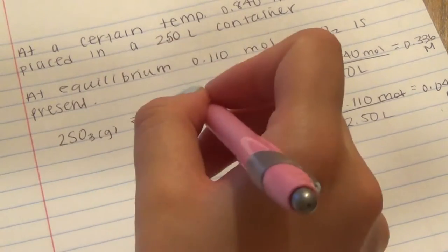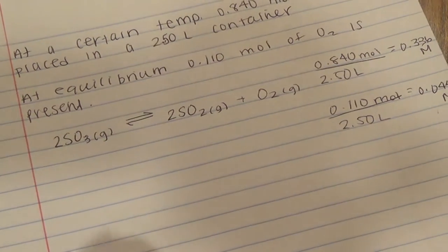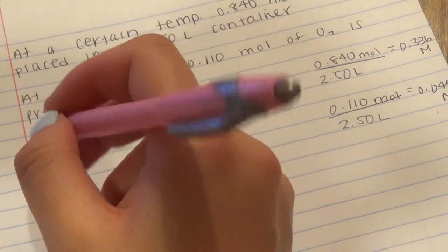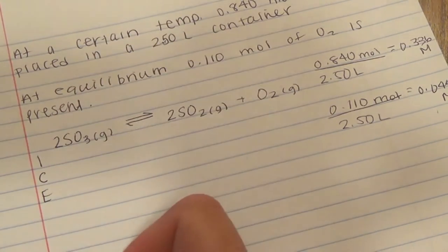So we'll have to do an ICE table. And we're solving for Kc. So we have initial, change, equilibrium.